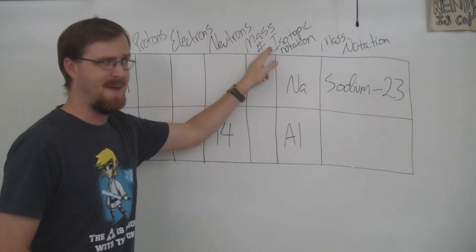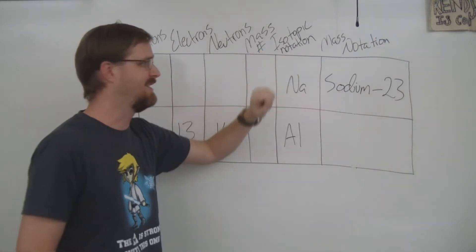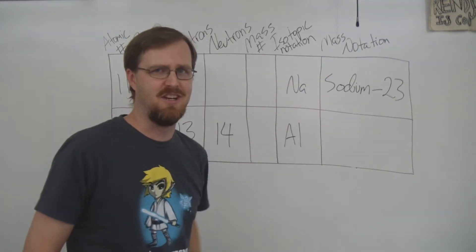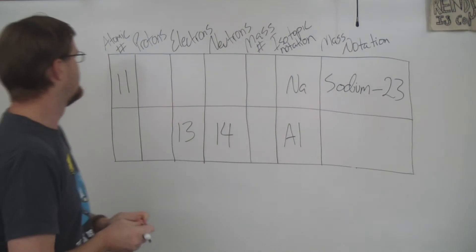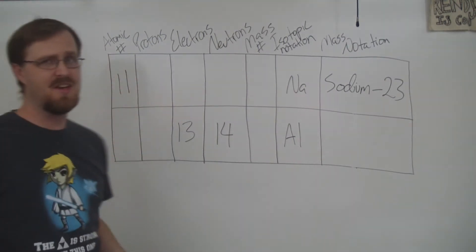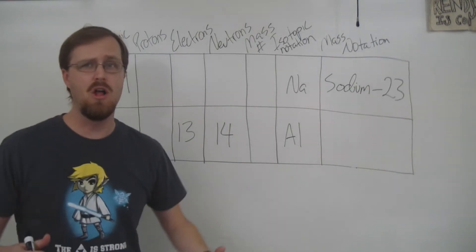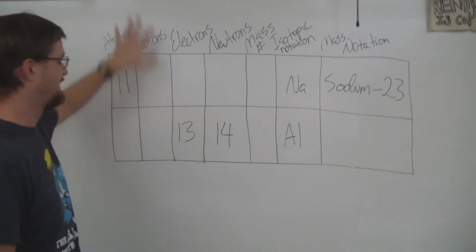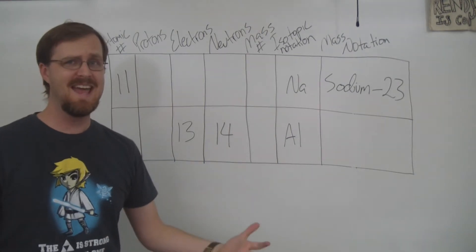We also have mass number, isotopic notation, and mass notation. All right, let's get to it. So the atomic number is the number of protons, and in all neutral atoms the number of protons and the number of electrons are the same.